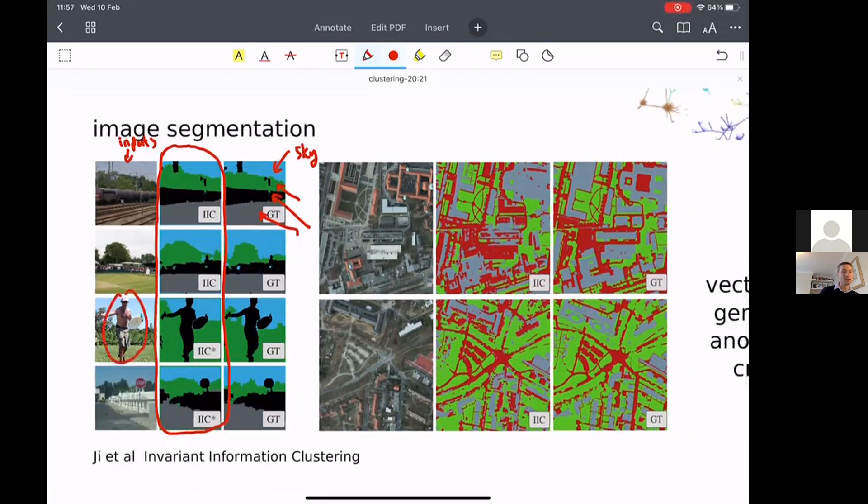So take this frisbee player here, it's able to automatically cluster all of the pixels. All the pixels belonging to the person and to the disk get assigned to the black cluster, the stuff in the background, the sky gets assigned to its own cluster and vegetation similarly and so on and so forth.